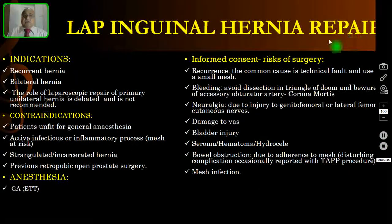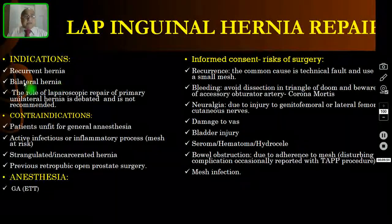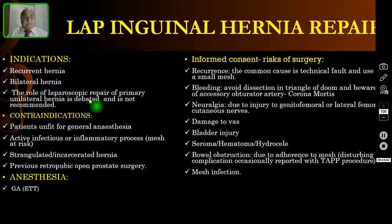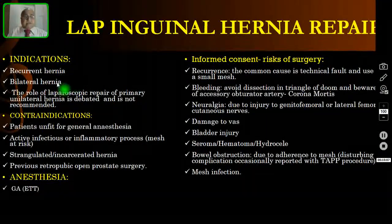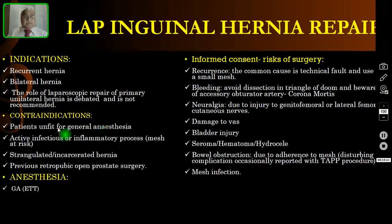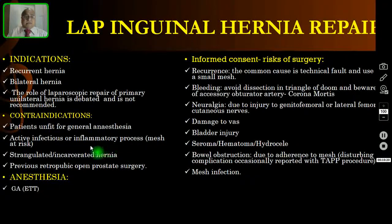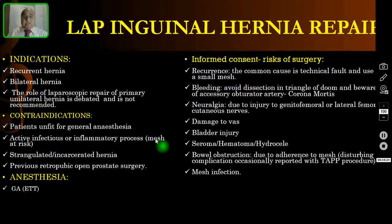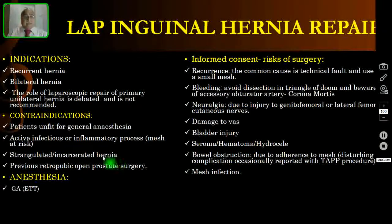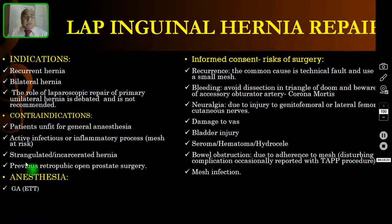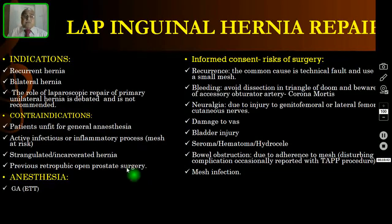What are the indications for laparoscopic inguinal hernia repair? Laparoscopic repair should be done only for recurrent hernias and bilateral hernias. The role of laparoscopic repair of primary unilateral hernia is debated and not recommended. Contraindications include patients unfit for general anesthesia, those with active infectious or inflammatory processes — because this may cause mesh infection — strangulated and incarcerated hernias, and previous retropubic open prostate surgery, which is a specific contraindication for TEP repair.